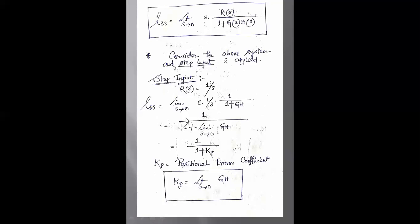So when a step input is applied to a system, the value of the error coefficient that we get is known as the positional error coefficient, and the Kp value is given by limit s tends to 0 of GH.